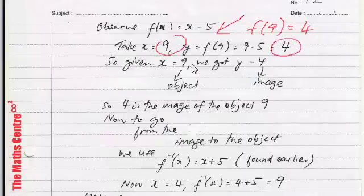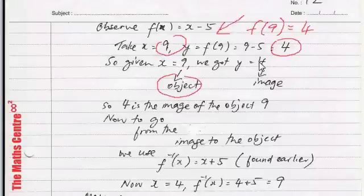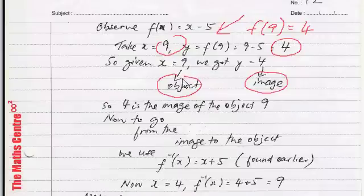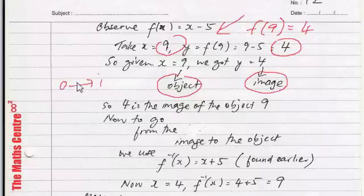Now, this value of x equals to 9, we call it the object. And this value of y that we have obtained, we call it the image. This is the language that we use in something called mapping. So, x is called the object and 4 here is called the image. So, objects are part of what we call the domain and images are part of what we call the range. So, 4 is the image. So, 4 is the image of the object 9.